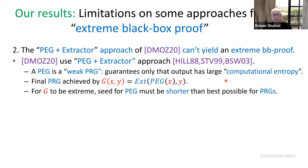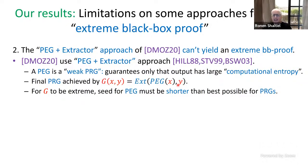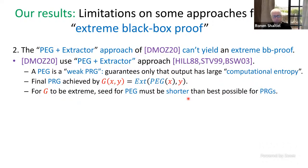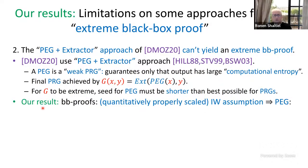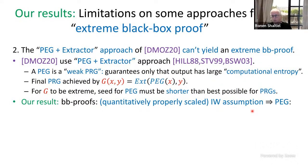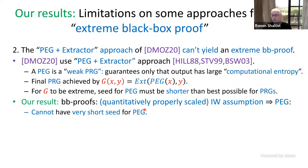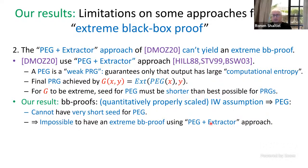If you want this constructed PRG G to be extreme — to have very short seed — then since we're already paying seed length for the extractor, the seed for the pseudo-entropy generator must be extremely short, shorter than the best possible seed for pseudo-random generators. This is indeed what DMOZ achieved. Our result shows that black-box proofs constructing PEGs from the quantitatively properly scaled Impagliazzo-Wigderson assumption cannot have very short seed, making it impossible to get an extreme black-box proof using PEG plus extractor.